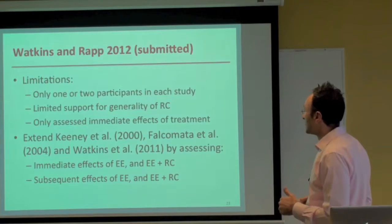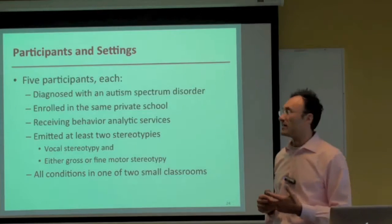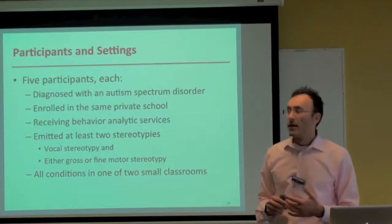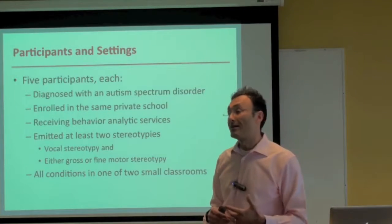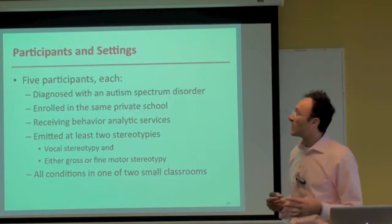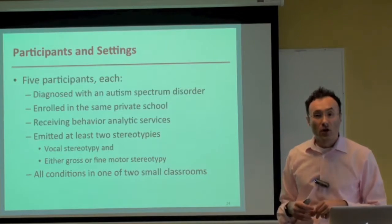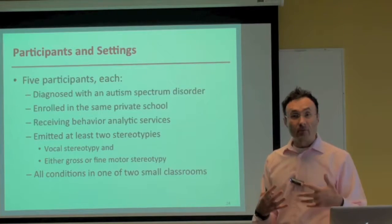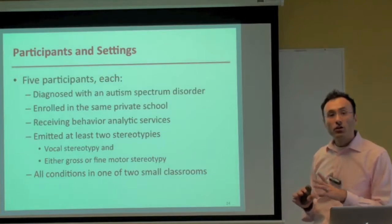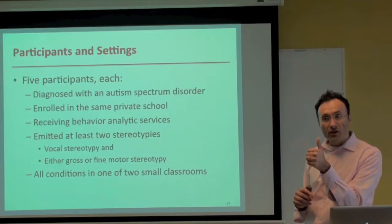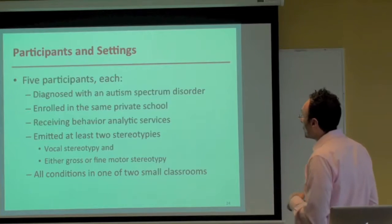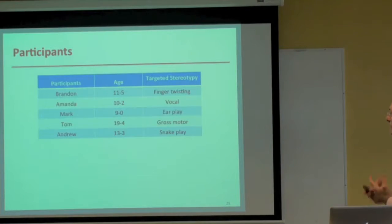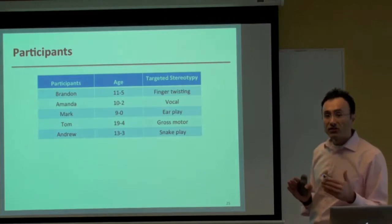We originally had seven participants; one was excluded due to sexualized behaviors that prevented videotaping, and one for whom we could not identify any reinforcers — leaving five participants, all diagnosed with ASD by clinicians independent of our study. They were enrolled in the same private school receiving behavior analytic services. All five emitted two forms of stereotypy: vocal stereotypy and either a gross motor or fine motor stereotypy. All conditions took place in one of two small rooms at the school.